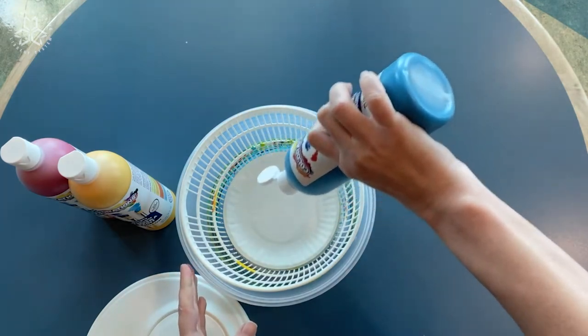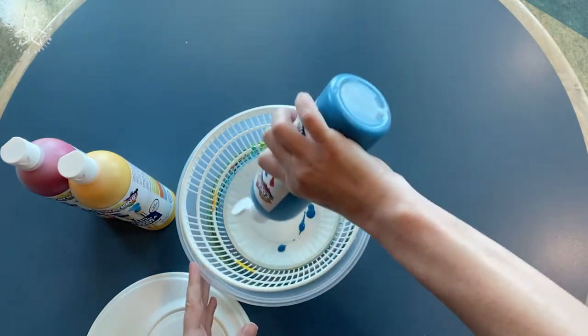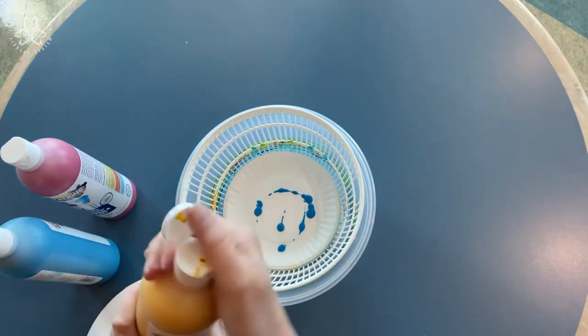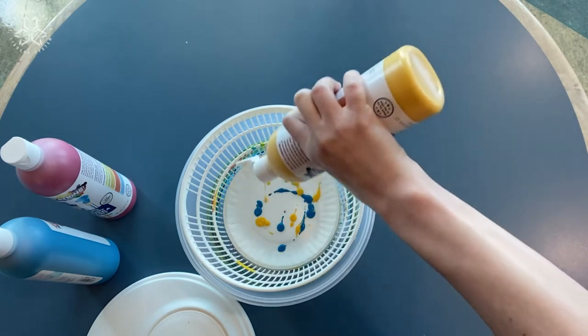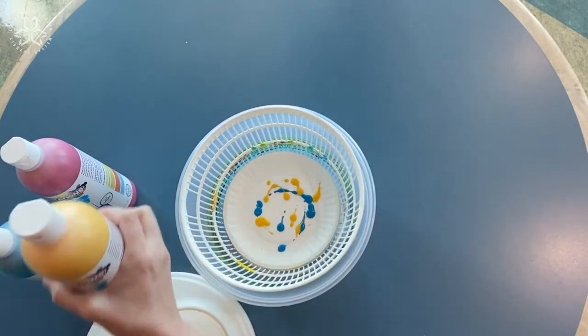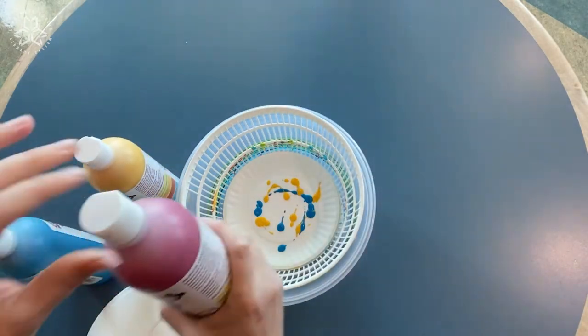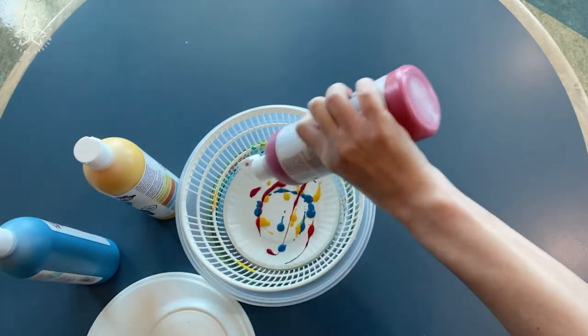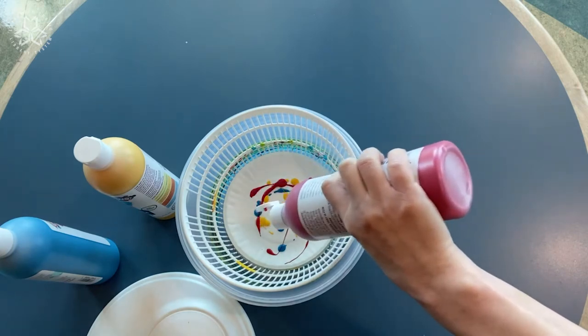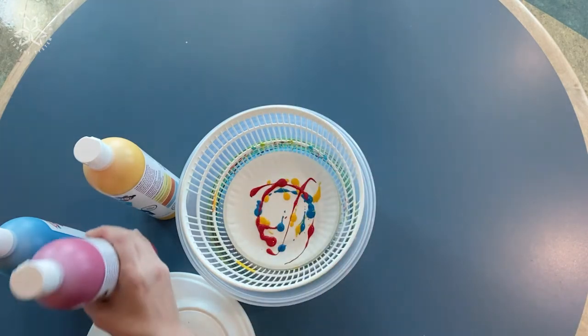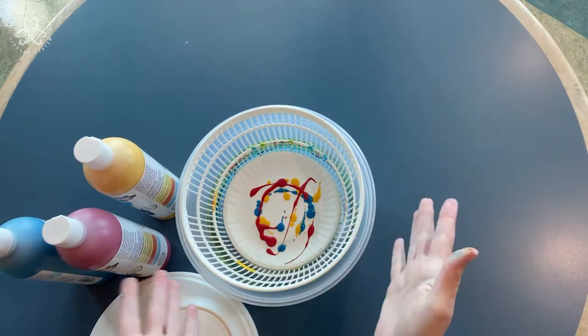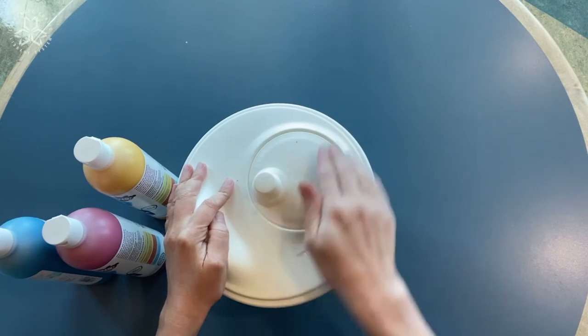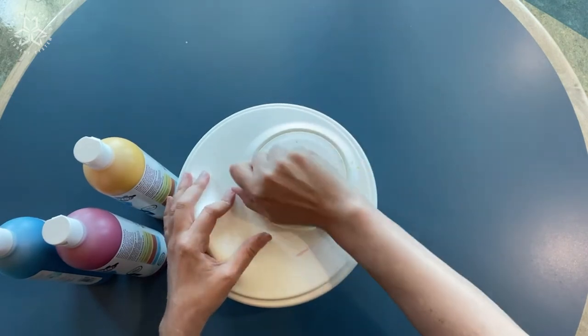Now you're going to add your paint. Something about like that will probably be good. I don't think I would use more than probably about three colors because you don't want it to get too muddy. But you can try it out and see. Alright. Once you've added your paint, you can go ahead and put the top of the spinner on and start spinning.